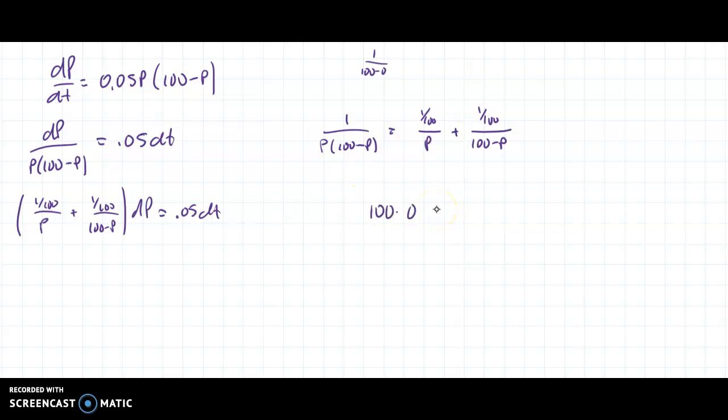So 100 times 0.05. Remember, the easiest way to do this is to go 1, 2 until we have 1 there. And then do the same thing here. 1, 2. And then that is the same as 1 times 5, which I know is 5. So I get 1/P + 1/(100 - P) = 5 dt.